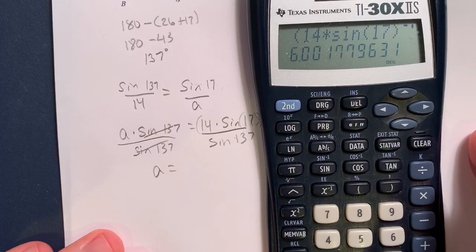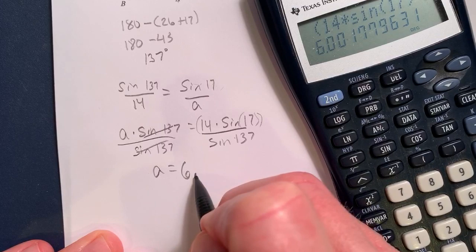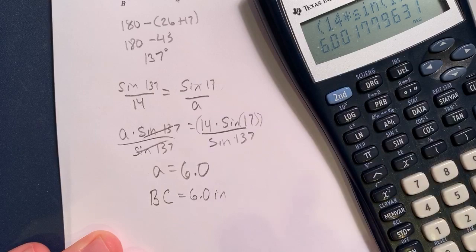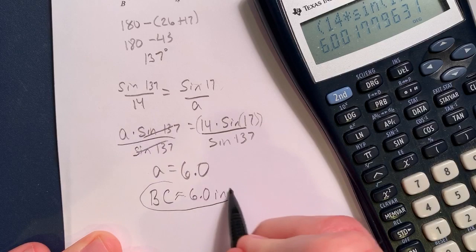And then after I've done that, I'm going to get that value and then divide by sine of 137. That ends up giving me, it says round to the nearest tenth. So I'm looking at 6.0. So the length of BC is 6.0 inches. And I'm going to change this just because it's a rounded number. So it's approximate. And that's how we use Law of Sines to find a side.